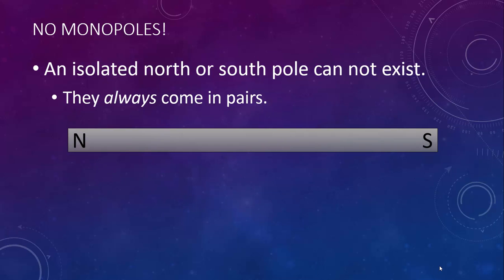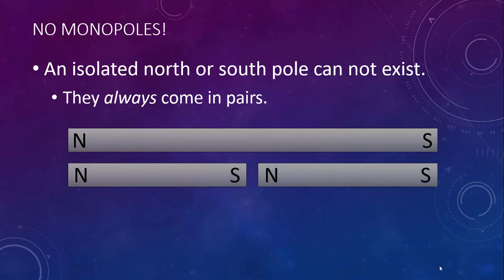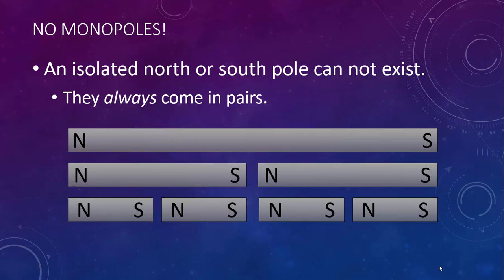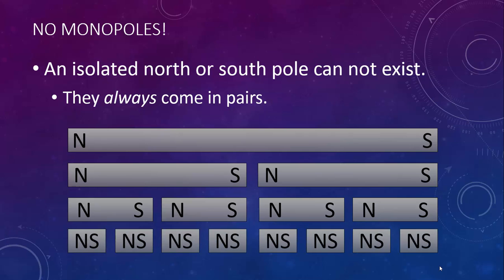If we take this long bar magnet and cut it in half, we get two smaller complete bar magnets, each with a north and south pole. We can keep cutting these magnets in half and ending up with complete bar magnets with both north and south poles, until we end up with individual atoms.